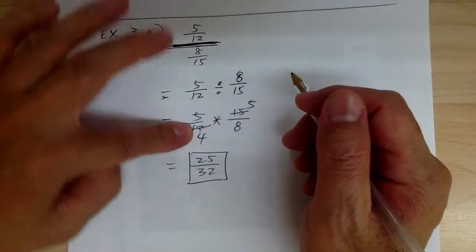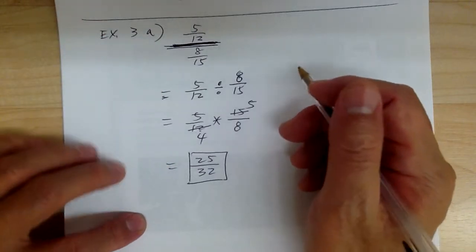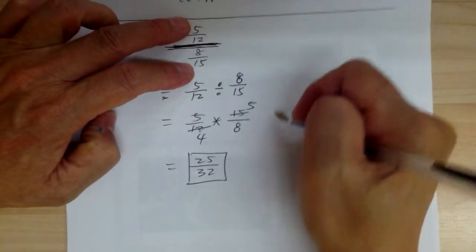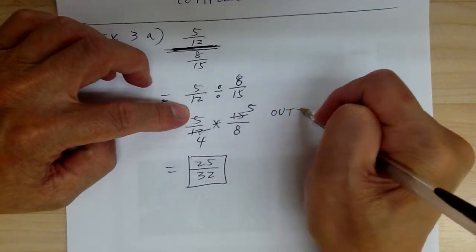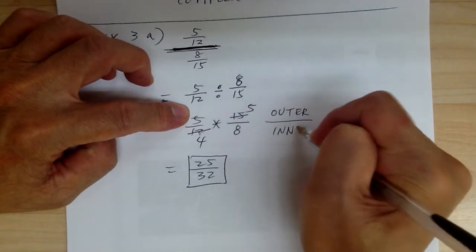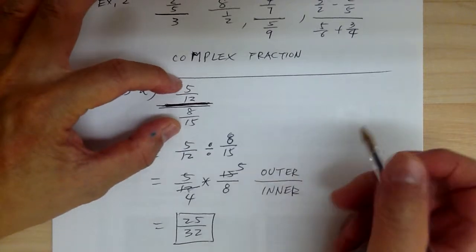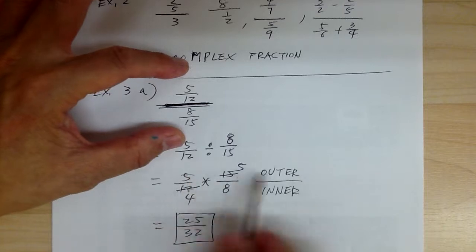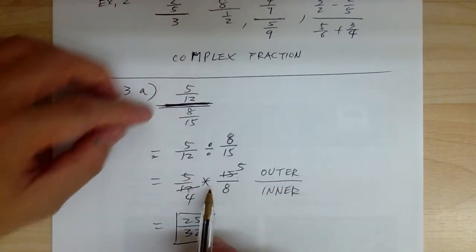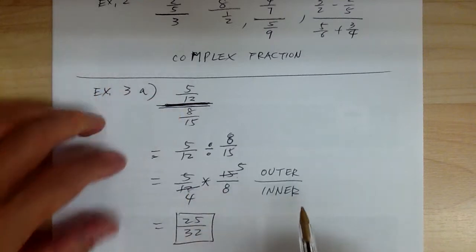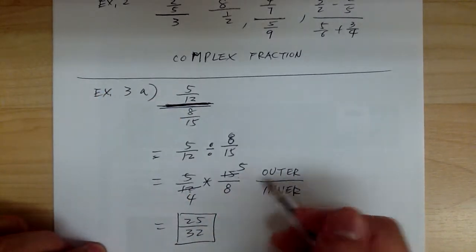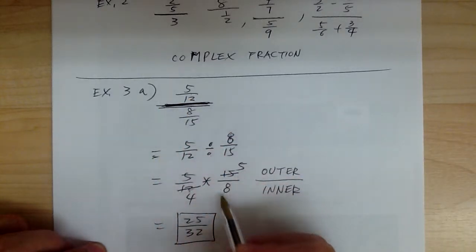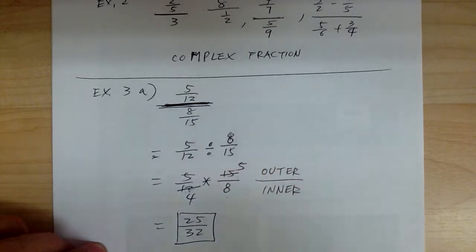But if you notice right over here, there's a shortcut that can save you one step. The way to do it is the outer over inner method: the numbers on the outside go on top, and the numbers on the inside go on the bottom. So 5 and 15 are the outer numbers on top, and 12 and 8 are the inner numbers on the bottom. If you don't remember the shortcut, you can just change this into division and flip it over.